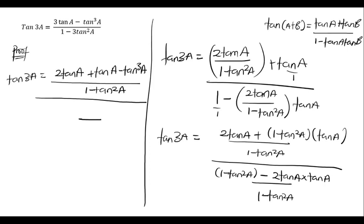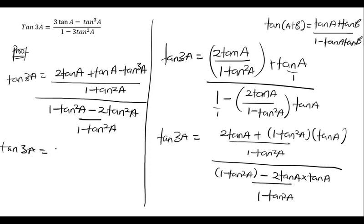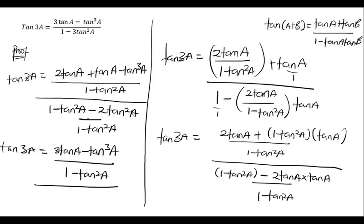So tan 3a equals — in the numerator, 2 tan a plus tan a gives us 3 tan a, minus tan cube a, all divided by 1 minus tan squared a. Then the bigger division, with the denominator: 1 minus tan squared a minus 2 tan squared a. We have negative tan squared a and negative 2 tan squared a, so that gives us 1 minus 3 tan squared a, all divided by 1 minus tan squared a.